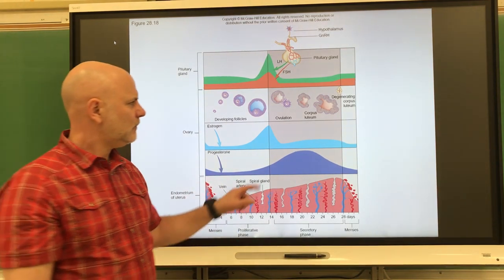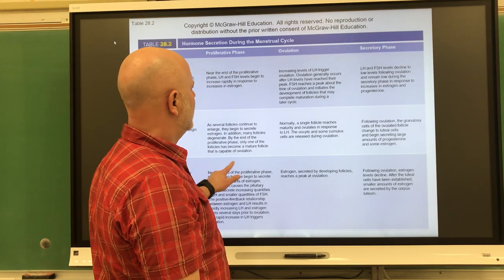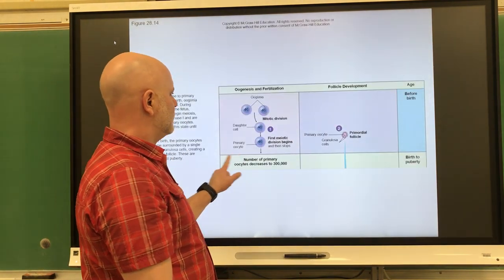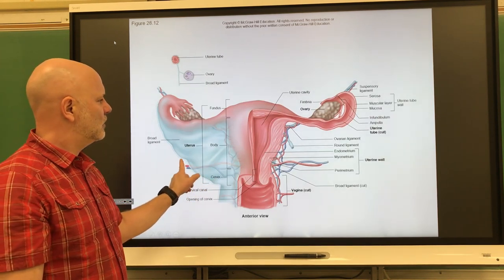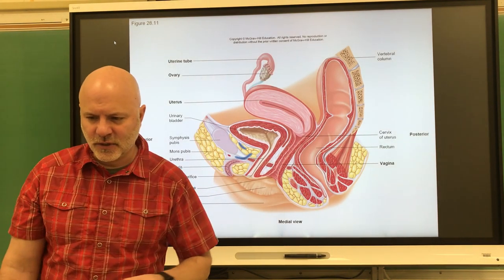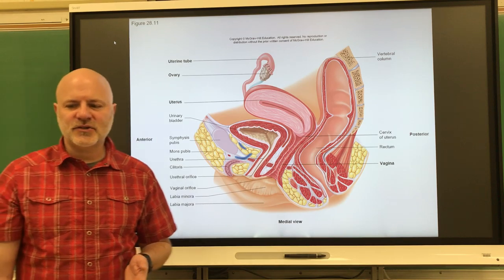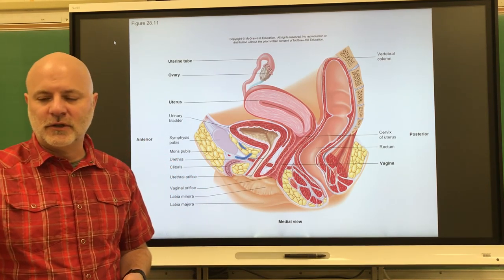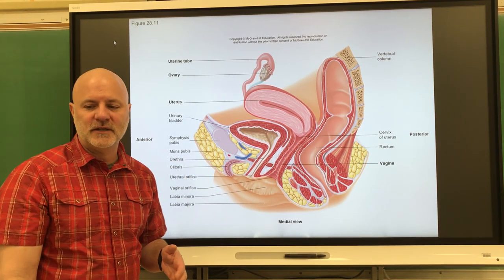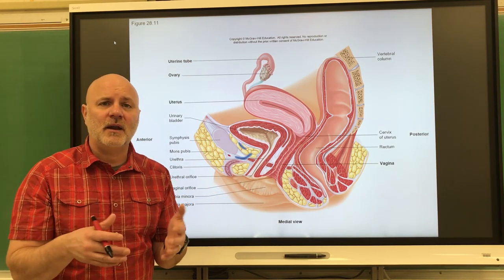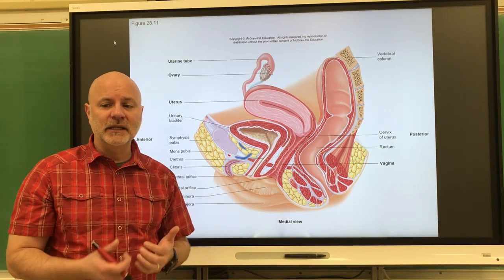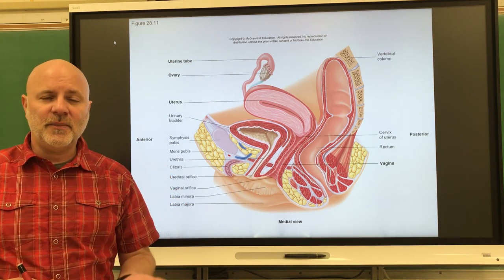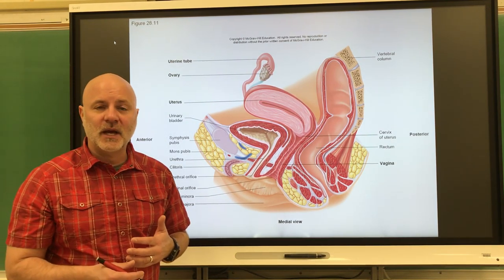Let's take a look now at the female sexual response. Upon sexual stimulation, erectile tissue within the clitoris and around the vaginal openings becomes engorged with blood, same thing that we talked about with erection in males. More blood flows into these areas than leaves. The nipples of the breast will often become erect.